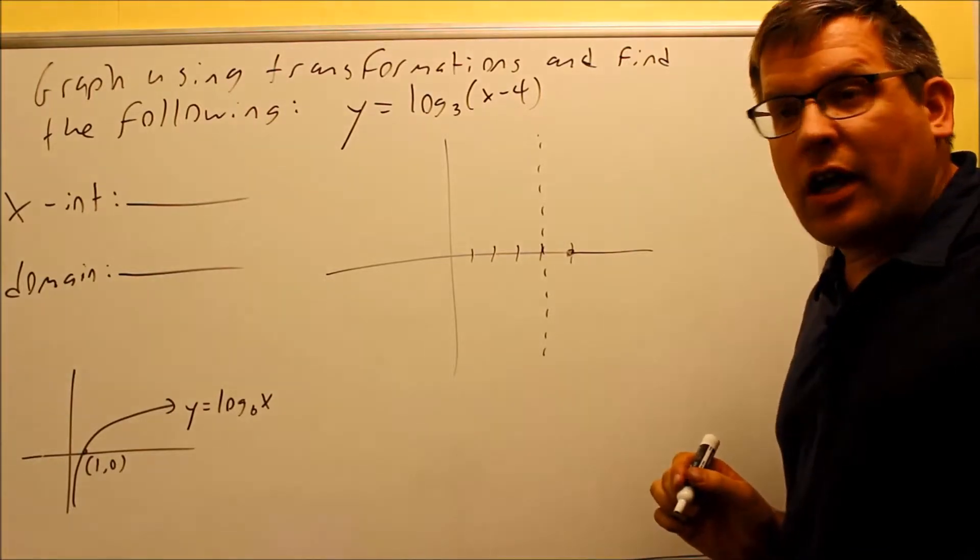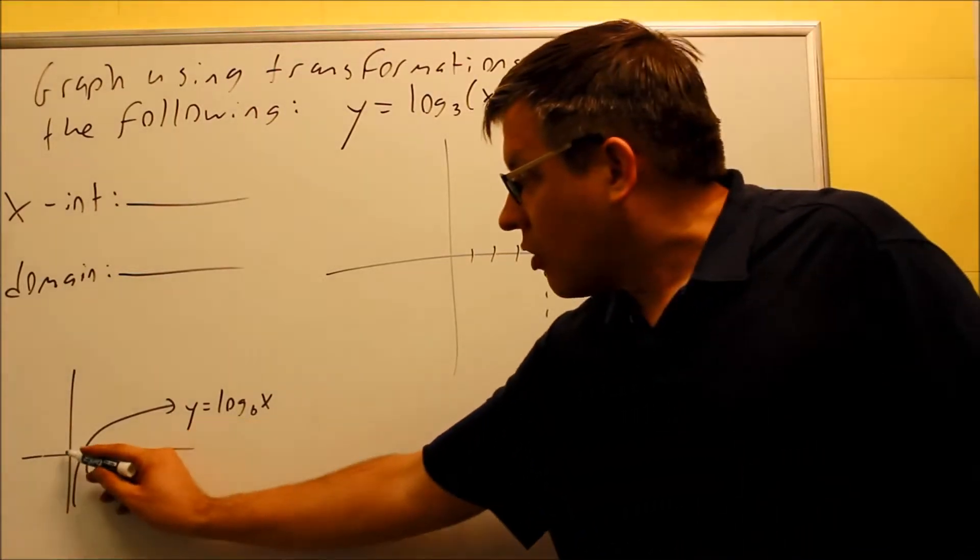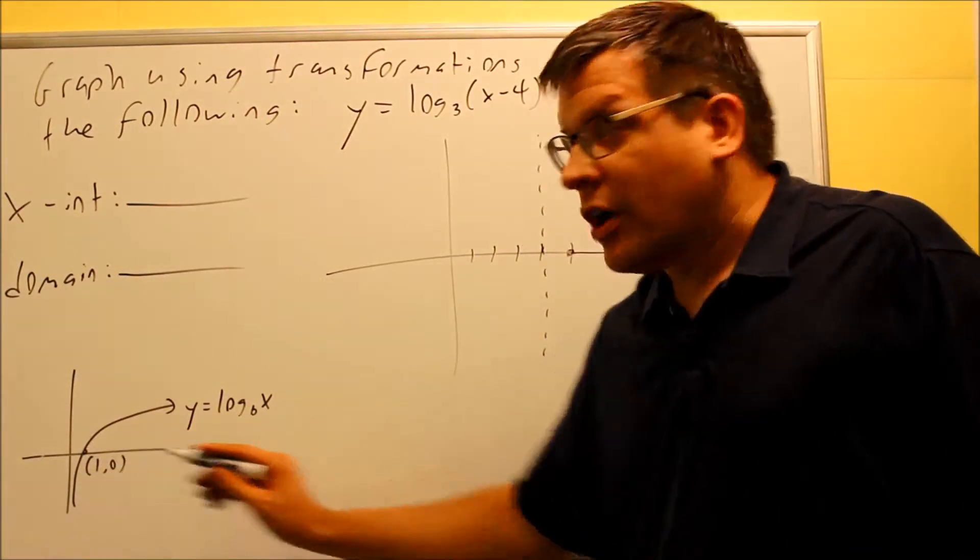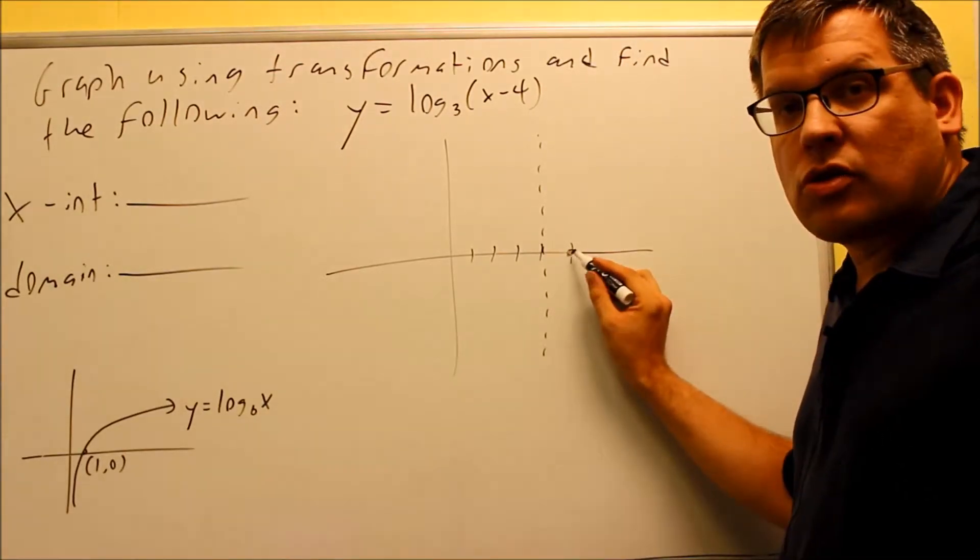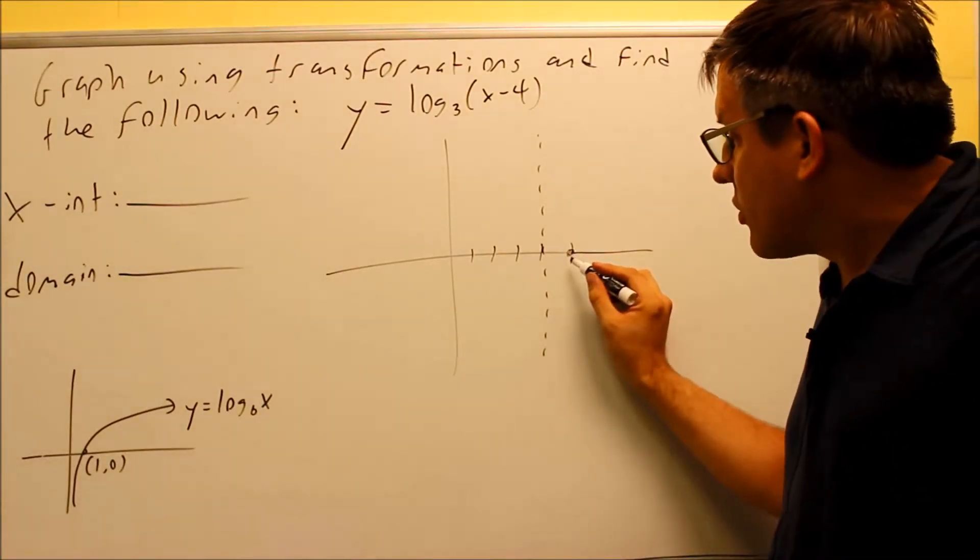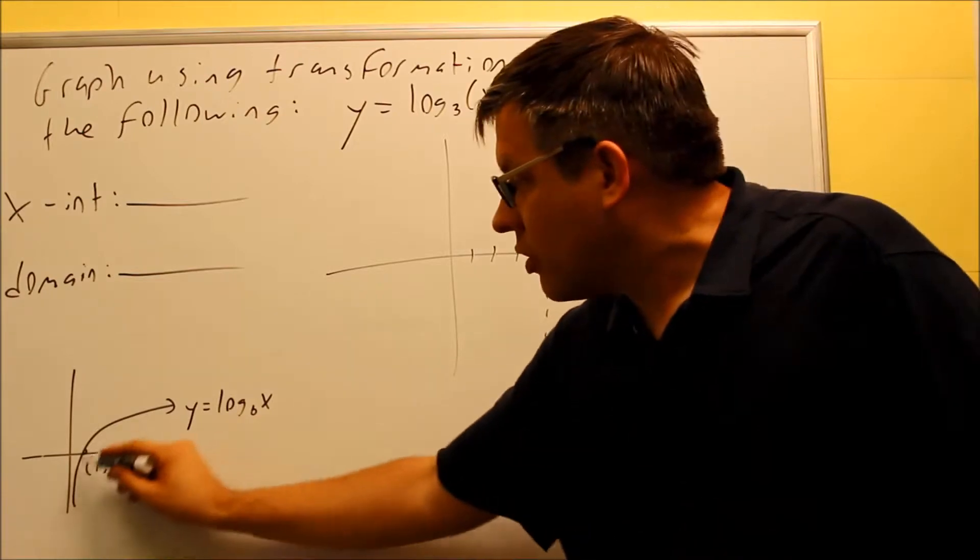Another way of looking at that is the original graph crosses one to the right of your vertical asymptote. This one's also going to cross one to the right of your vertical asymptote. The general shape is going to look like this.